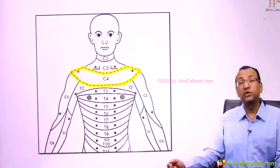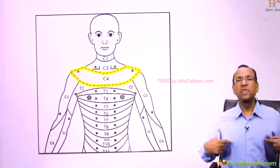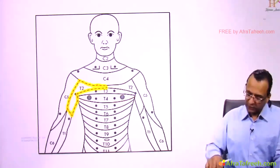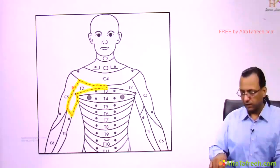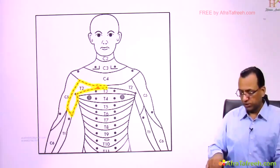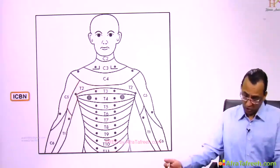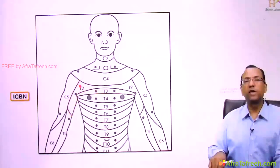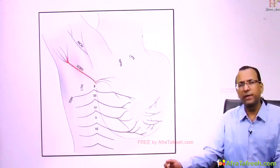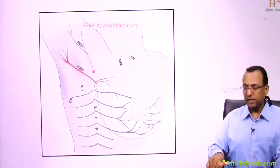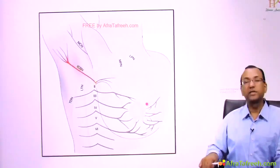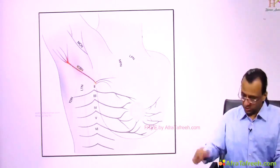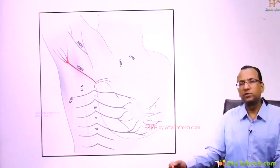The shoulder tip dermatome is C4 and the nipple level is T4. The intercostal brachial nerve has T2 root value and supplies not only the thoracic skin but also the upper inner arm. This nerve is at risk of injury during sentinel lymph node biopsy for breast cancer, as it passes from the thorax region toward the upper inner arm bringing T2 dermatome.